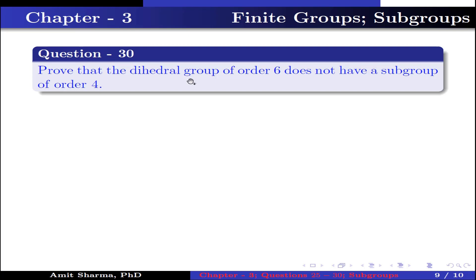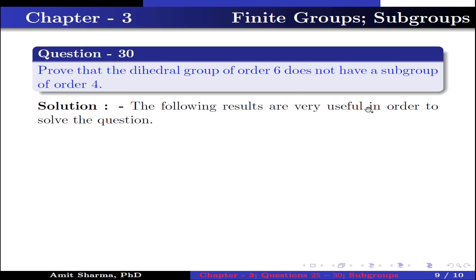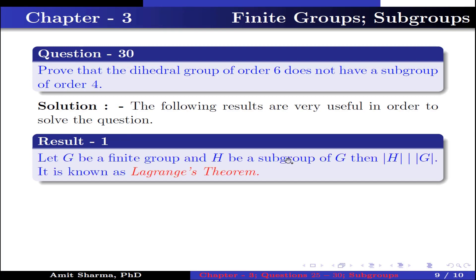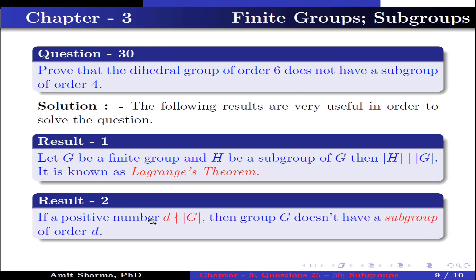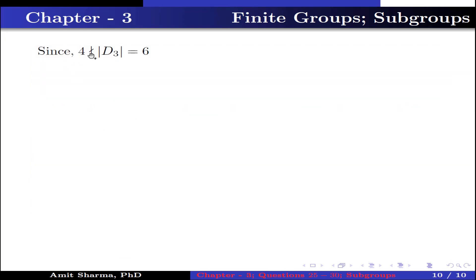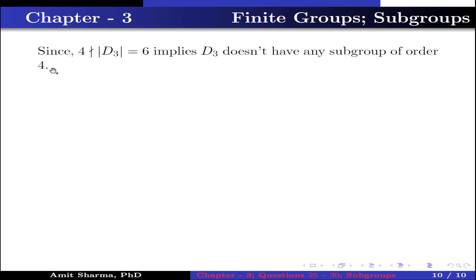Question number 30: prove that the dihedral group of order 6 does not have a subgroup of order 4. By Lagrange's theorem, the order of any subgroup must divide the order of the group. Since 4 does not divide 6, the group D₃ (dihedral group of order 6) does not have any subgroup of order 4.